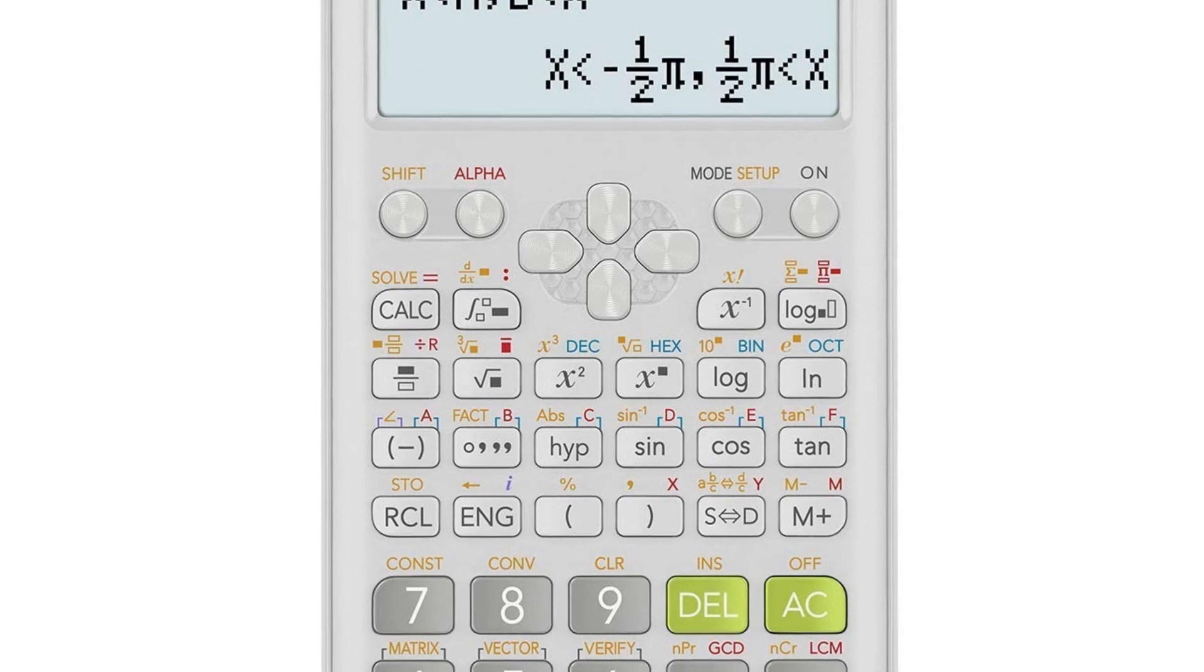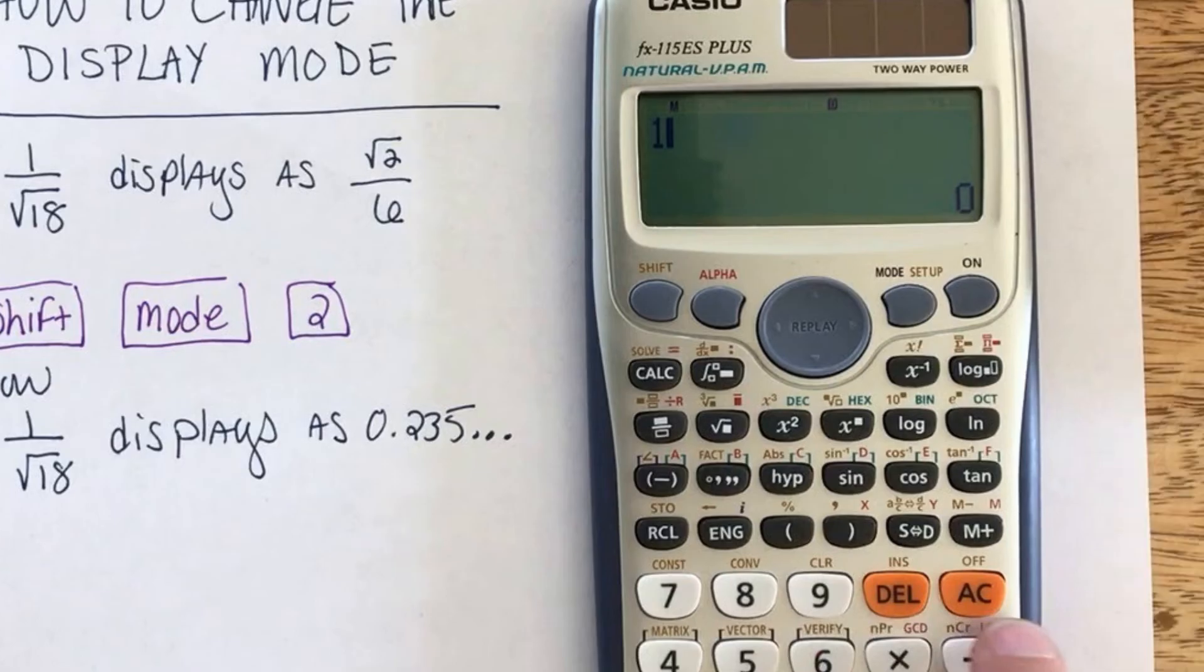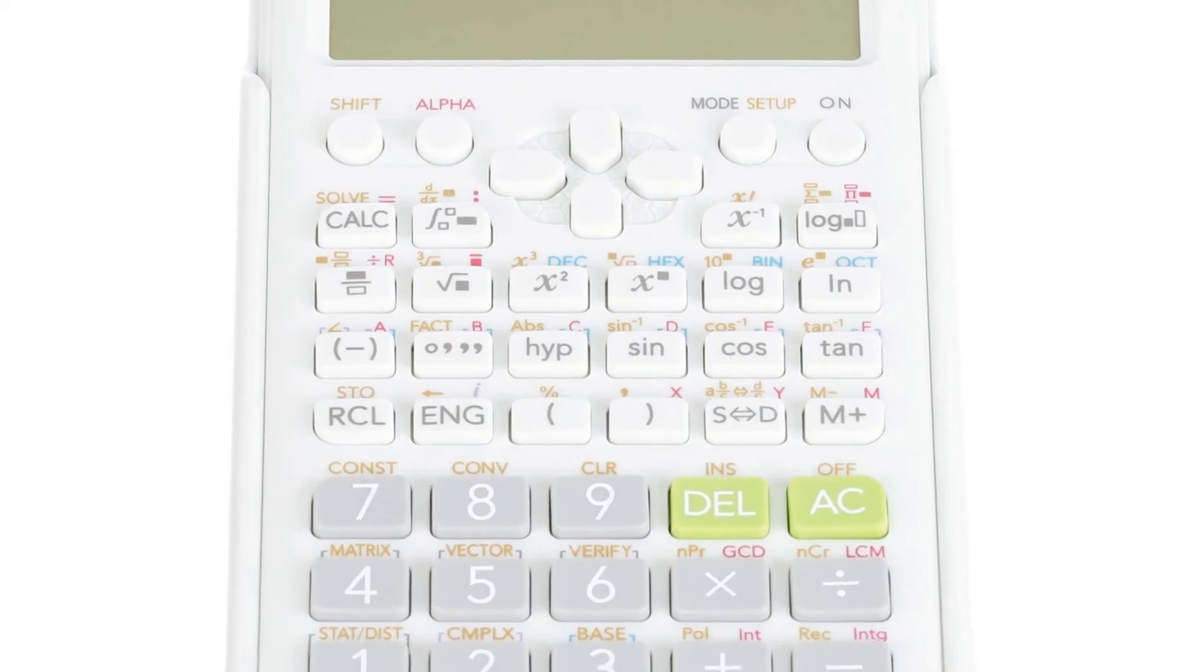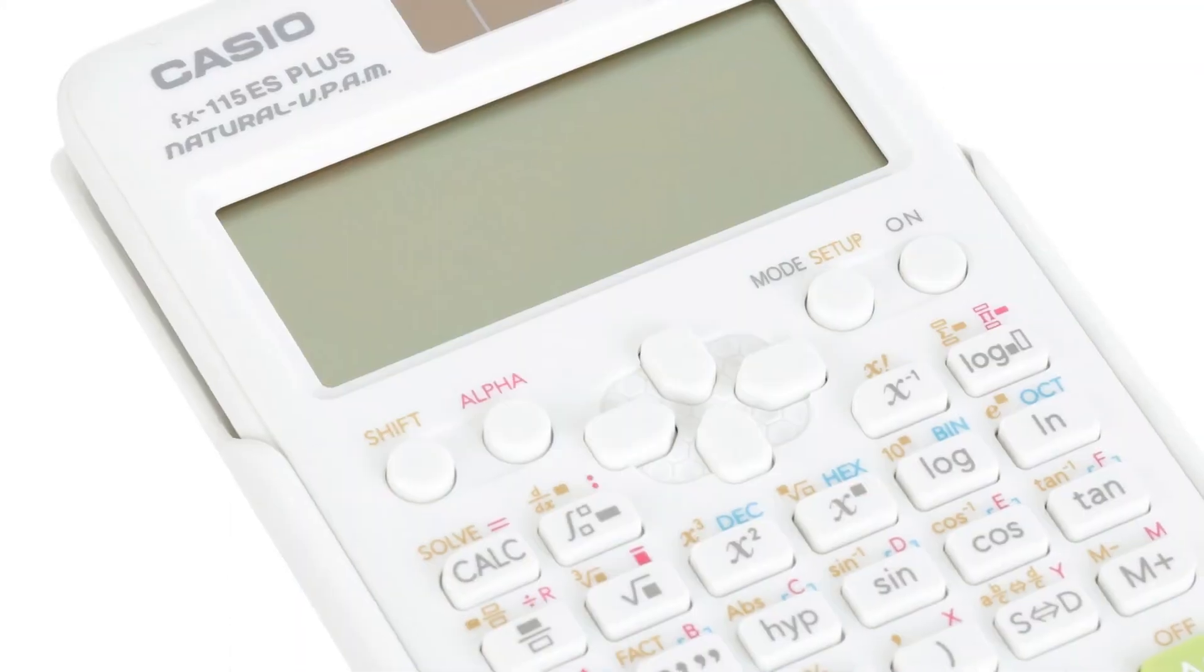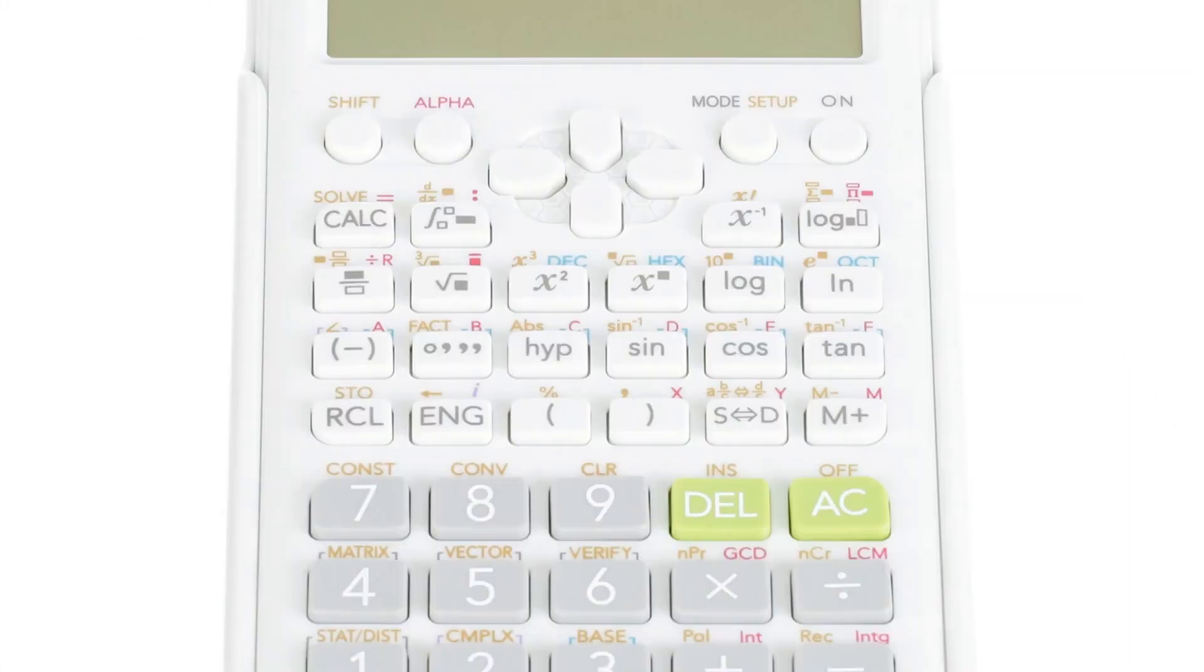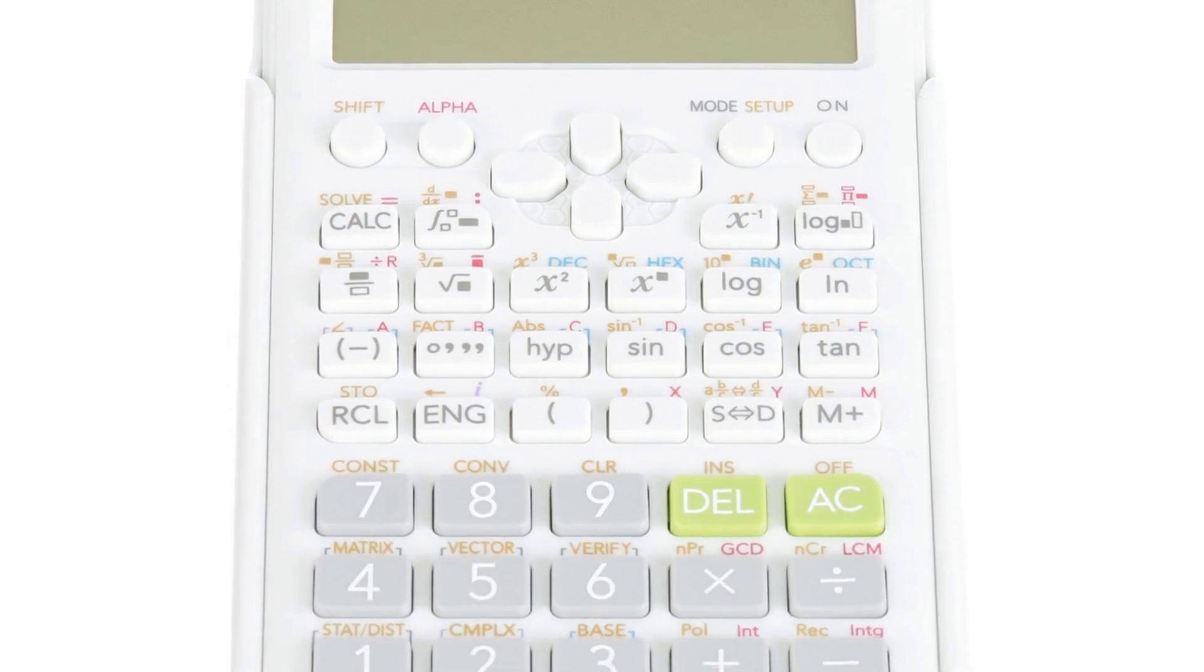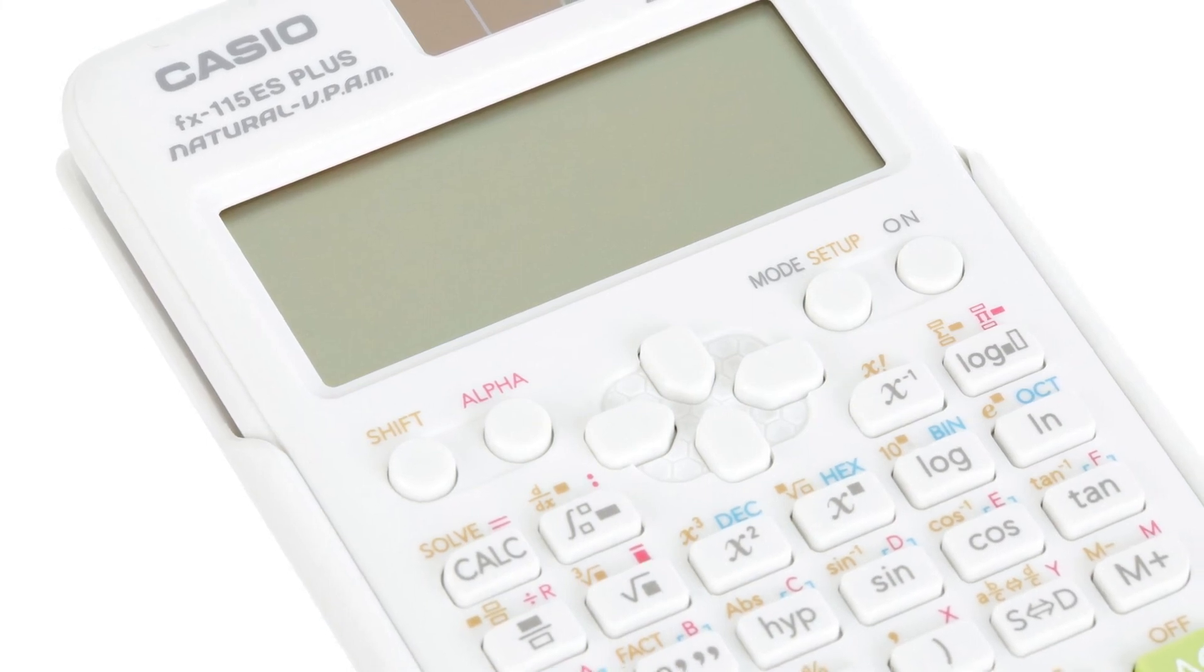Multi-replay function allows you to backtrack step-by-step through calculations where you can edit expressions and recalculate answers. Calculator has 40 metric conversions and 40 scientific constants. Table function, matrix and vector calculations, list-based stat data editor, solar plus with battery backup. Comes with slide-on hard case.